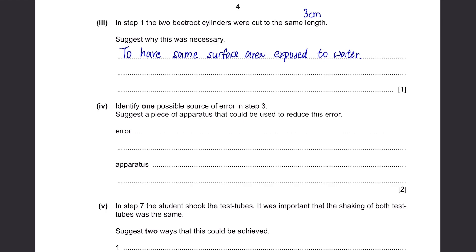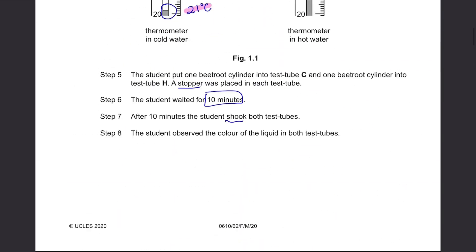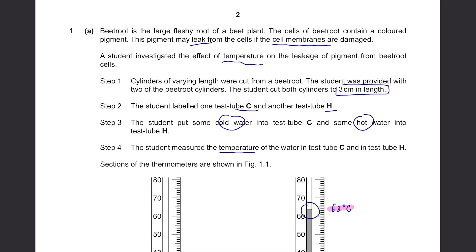Identify one possible source of error in step 3. Suggest a piece of apparatus that could be used to reduce this error. Going back to step 3, it was when the student put cold water and hot water into test tube. So obviously, you've got to say something related to putting the water or just anything about the water. Well, they did not mention the volume of water that they're going to use. So what if they put 20 cm³ of cold water and 200 cm³ of hot water? Now, that's not going to make it a fair experiment. So you need to make sure you put the same volume of water. And the apparatus you can use is a burette or measuring cylinder. Anything that you use to measure the volume of a liquid.